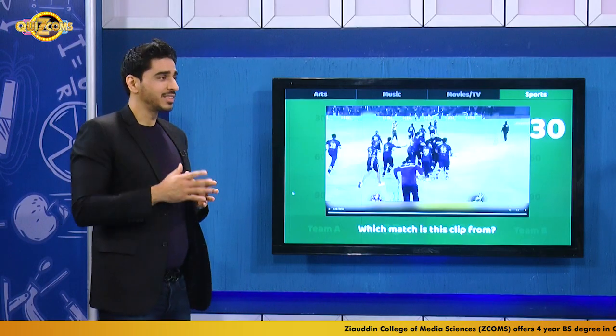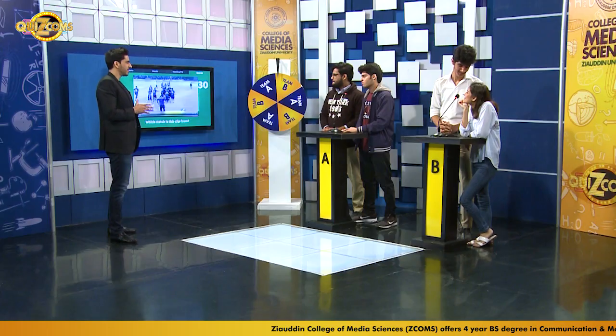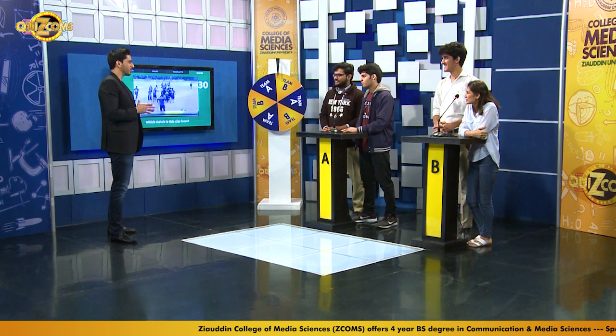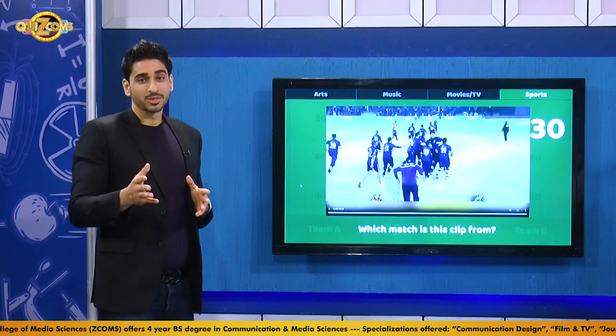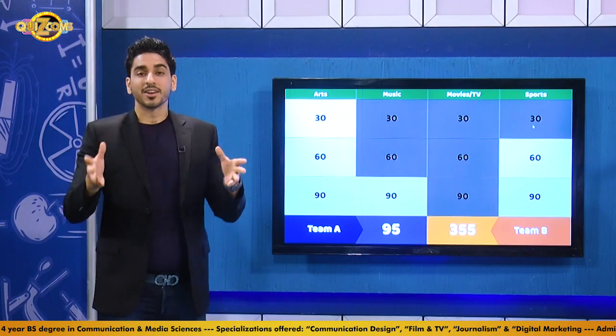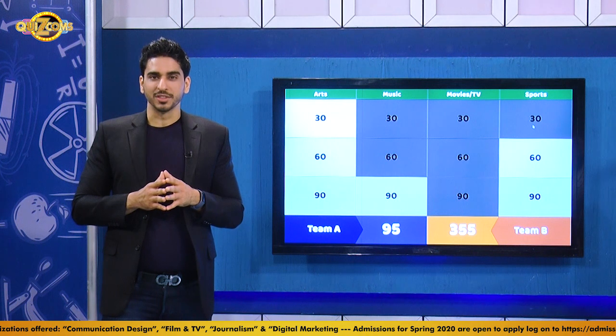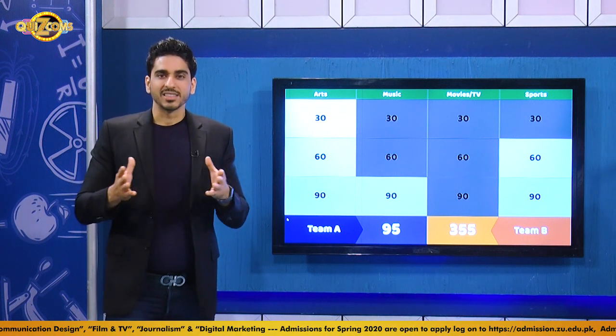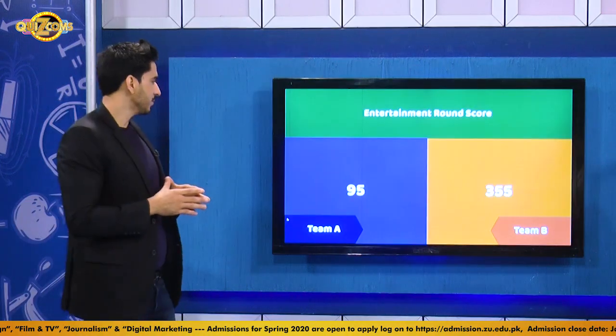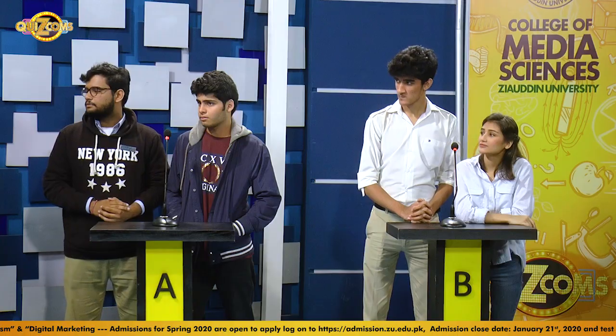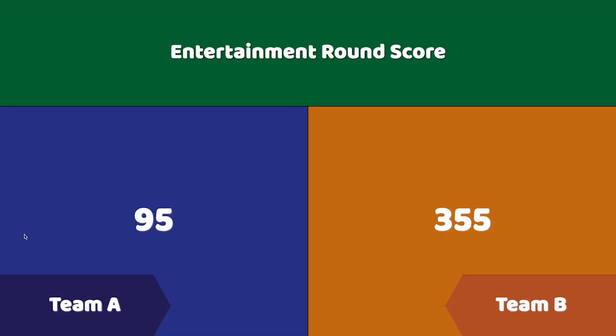Team A gets a free hit with nothing to lose. They answer Qatar vs LME 2018 — also unfortunately wrong. The correct answer is the PSL final 2019. That brings us to the end of the round and the show. Final point totals: Team A has 95 points and Team B has 355 points — likely the biggest margin the show has seen yet.